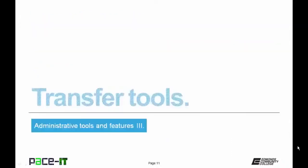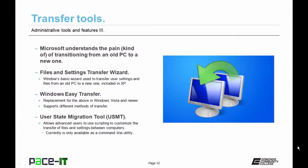Now let's talk about transfer tools. PCs become obsolete and sometimes you want to transfer settings and files between computers. Microsoft originally came up with the Files and Settings Transfer Wizard for XP — a basic wizard to transfer user settings and files. Because of user input, Microsoft came up with Windows Easy Transfer for Vista and newer, replacing the wizard and supporting several methods of transfer: portable hard drives, USB flash drives, direct connection, and so on — though it is still fairly basic.